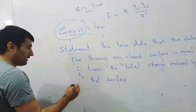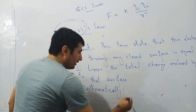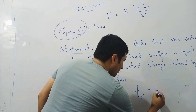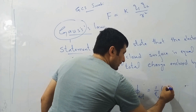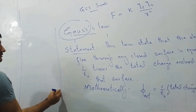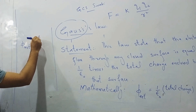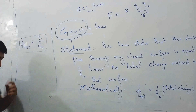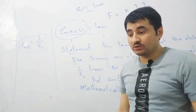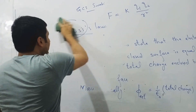Mathematically, the net flux Φ is equal to Q/ε₀, where Q is the total charge enclosed. We can also write this as: electric flux Φ = E·A = Q/ε₀. That is the mathematical form of Gauss's law. Now let's prove this statement — that flux equals Q/ε₀.